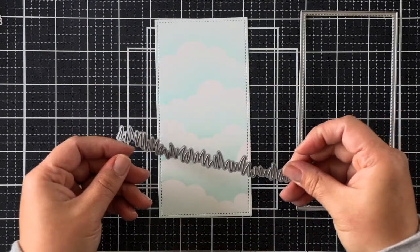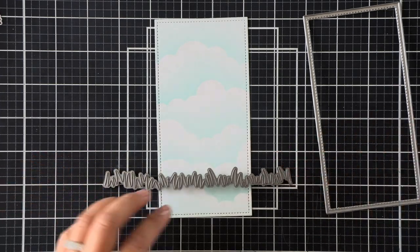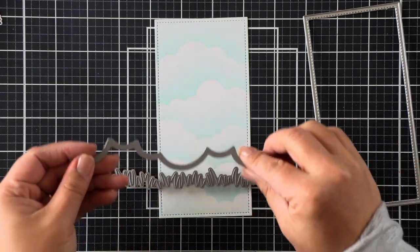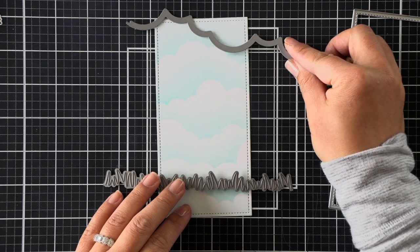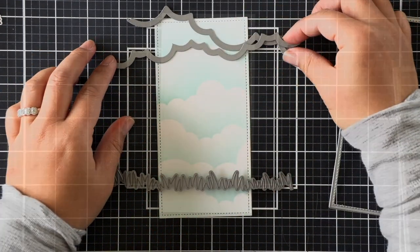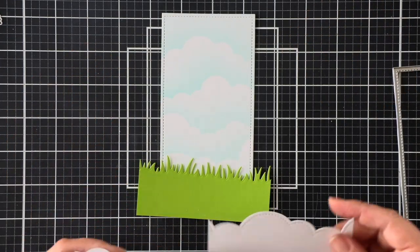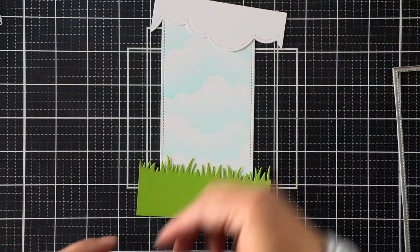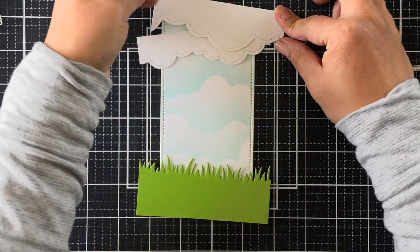I'm going to die cut a grassy border here with some cilantro cardstock and as well as some puffy cloud borders using some white cardstock to create my scene from the top and bottom. I die cut two cloud panels and one grassy panel, but I will die cut a second grassy panel later on to kind of match the dimension top and bottom.